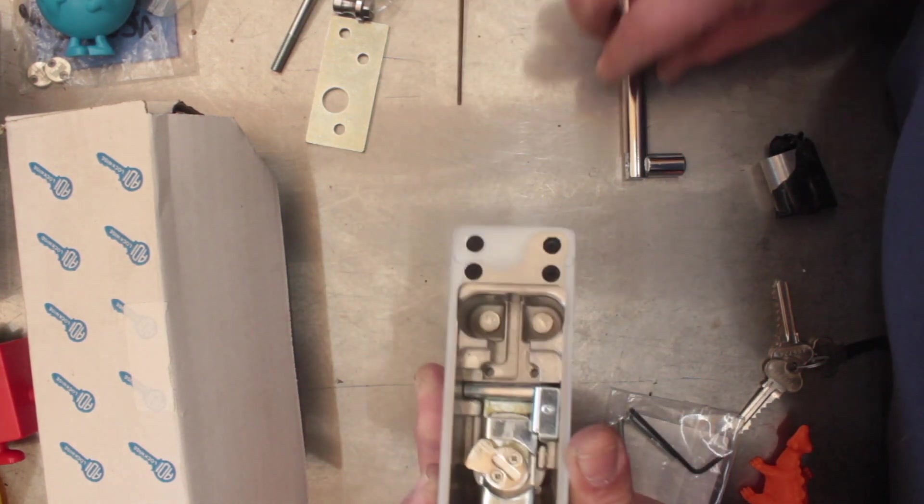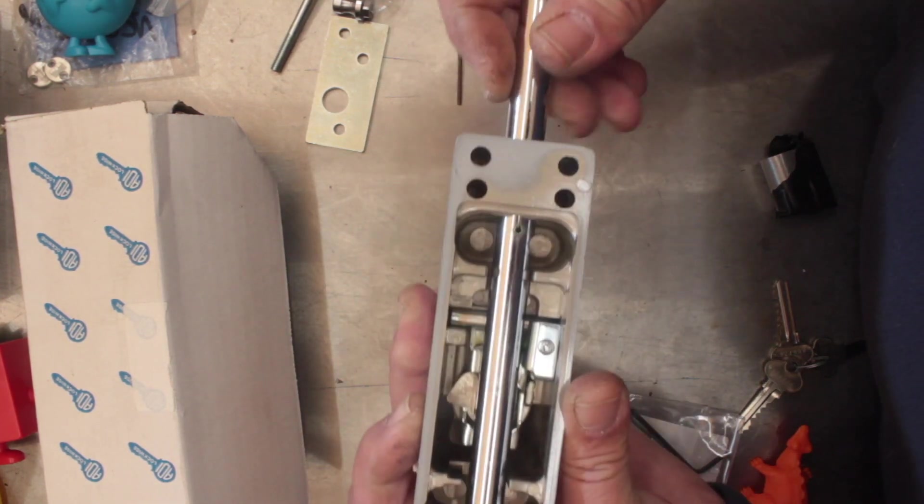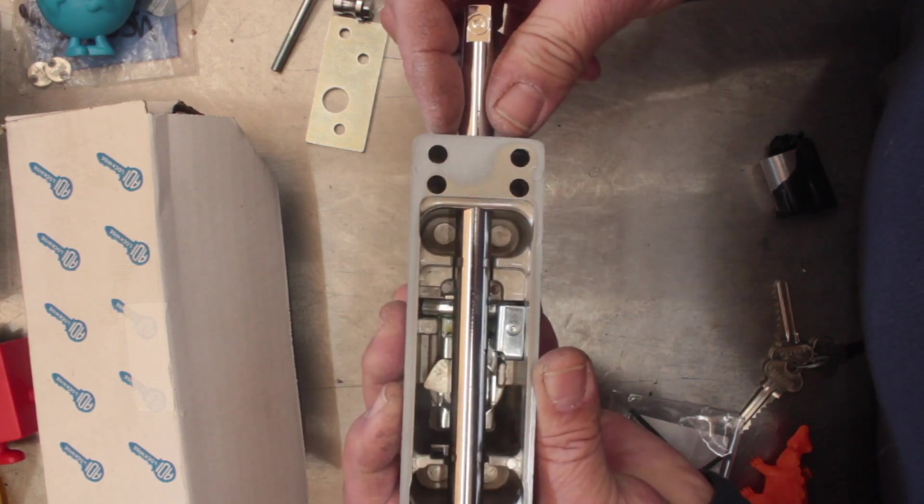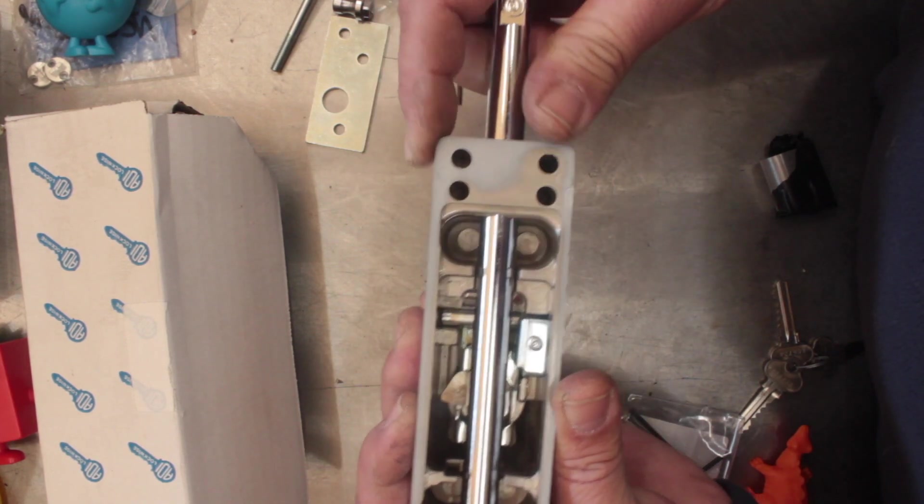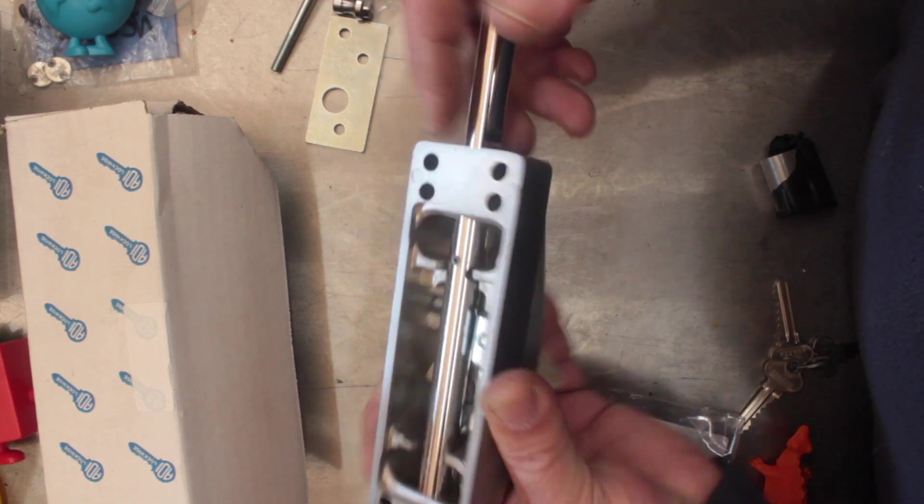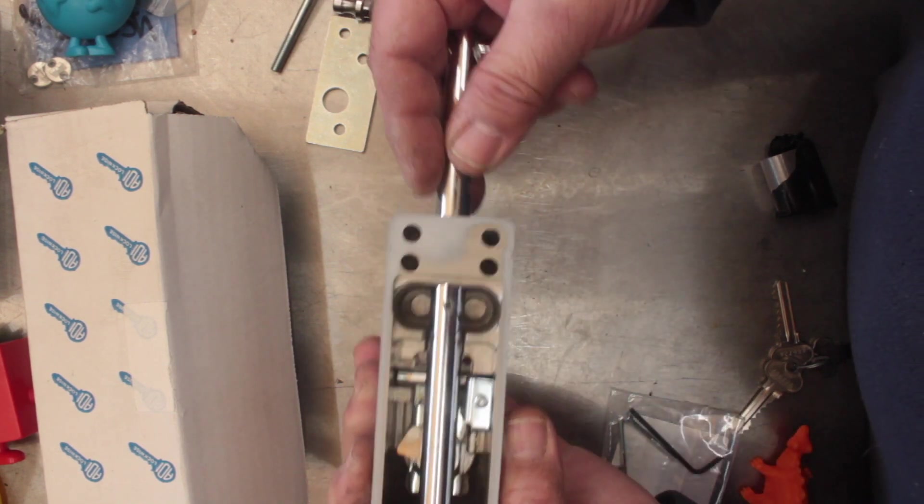Once you've got your bolt out, I'll do that real quick one more time. You undo with your key, pull it up till it comes to a stop, rotate it around—I'm rotating it to the left.